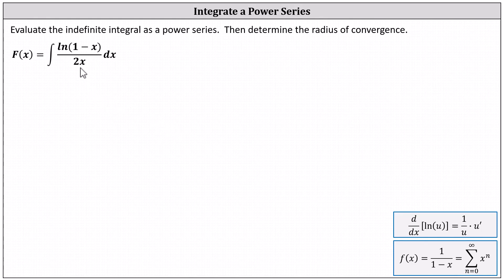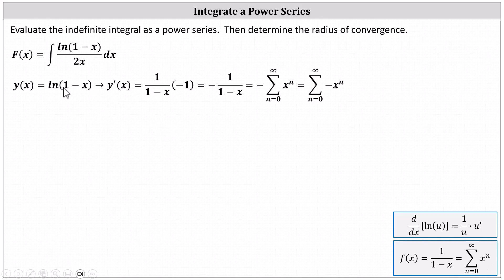Let's begin by letting y(x) equal the natural log function. Notice the derivative is equal to 1 divided by (1 minus x) times the derivative of (1 minus x), which is negative 1, giving us negative 1 divided by (1 minus x). This equals the opposite of the sum from n equals 0 to infinity of x to the power of n, which equals the sum from n equals 0 to infinity of the opposite of x to the power of n.